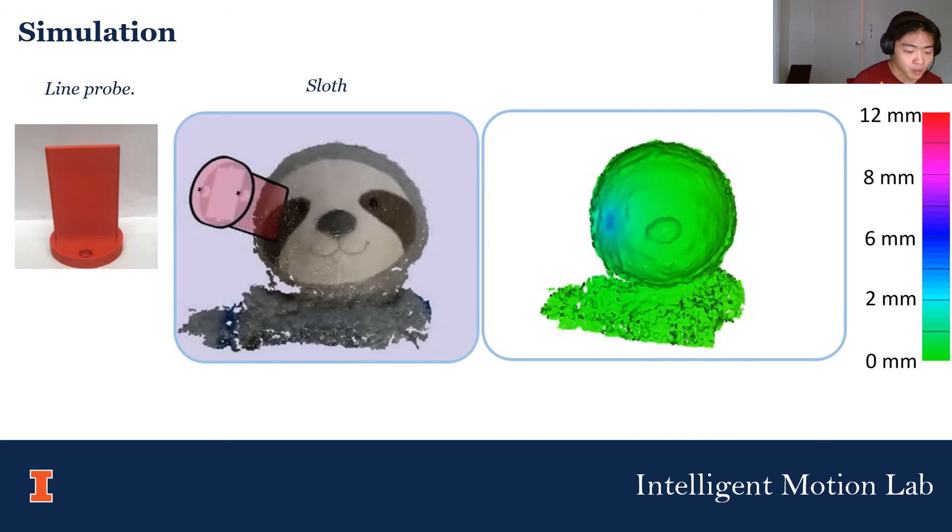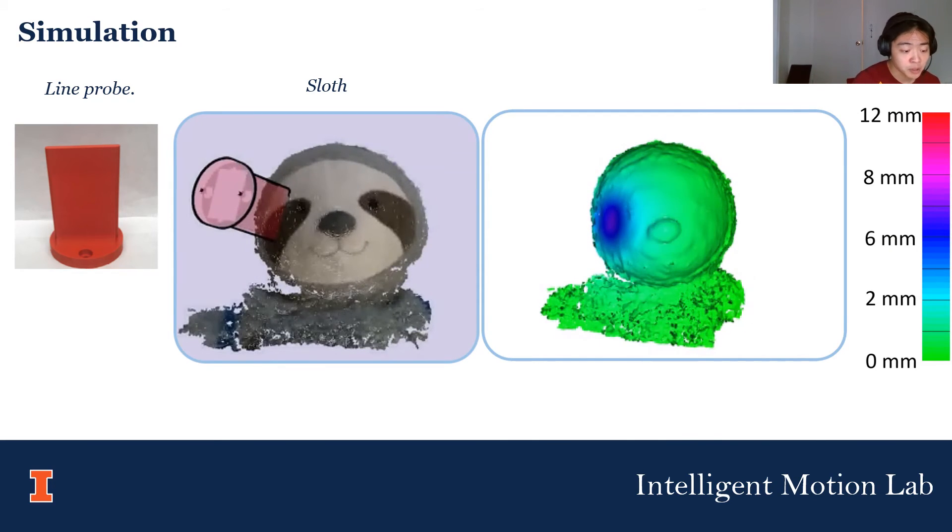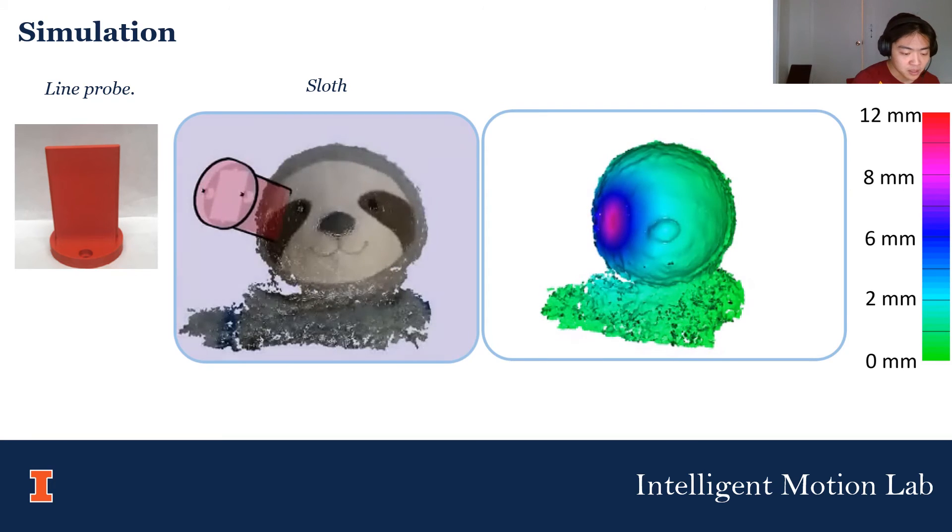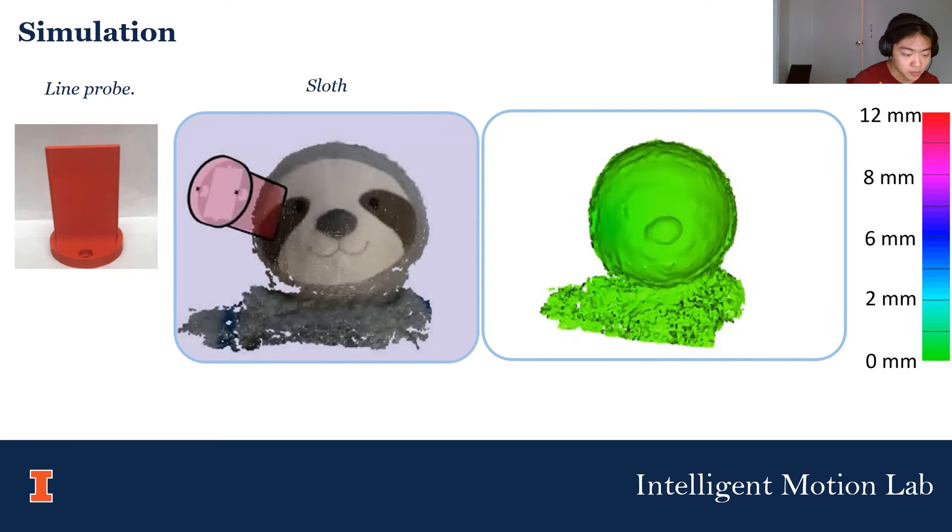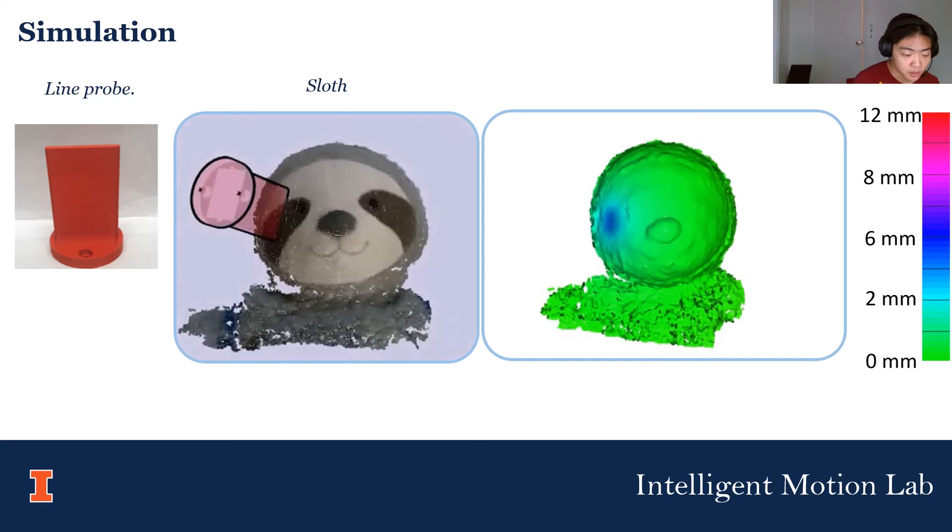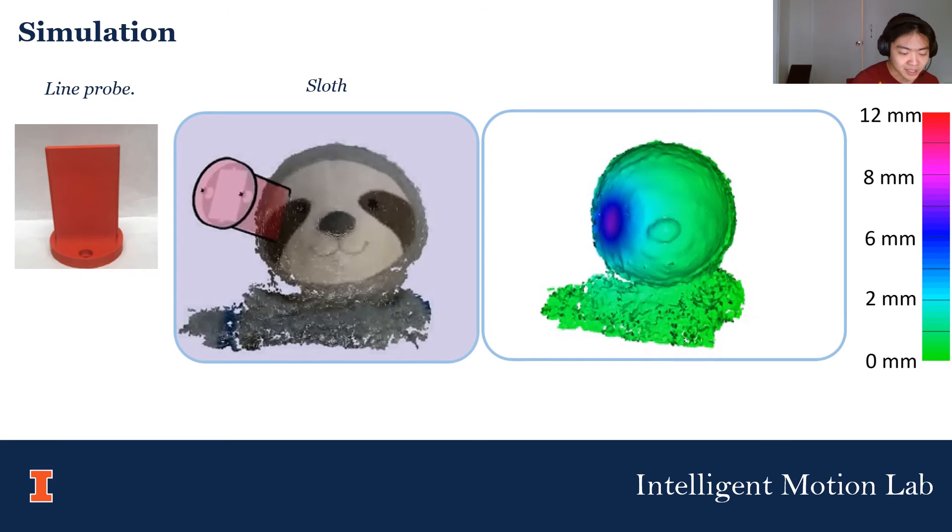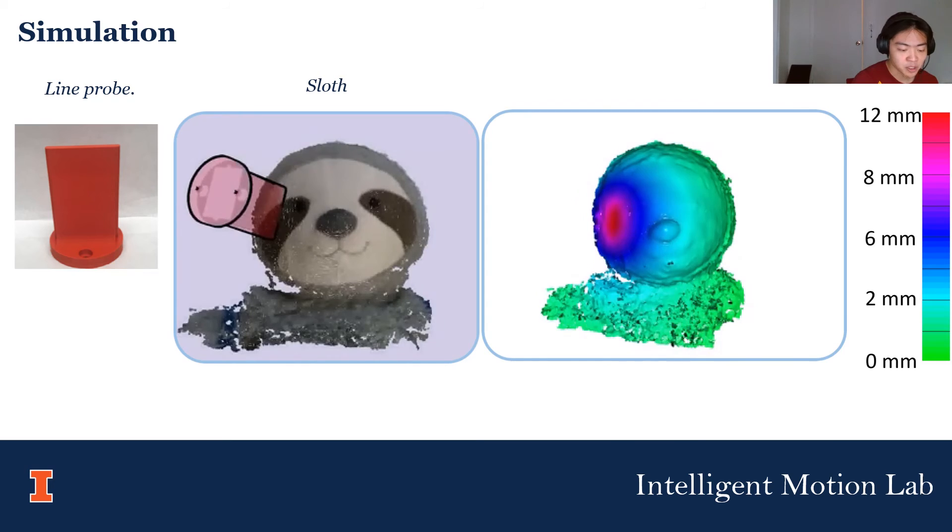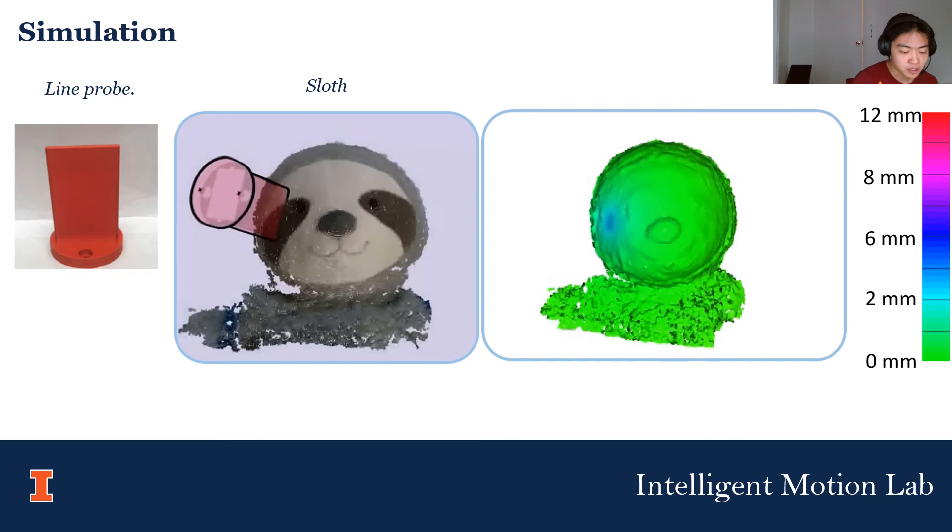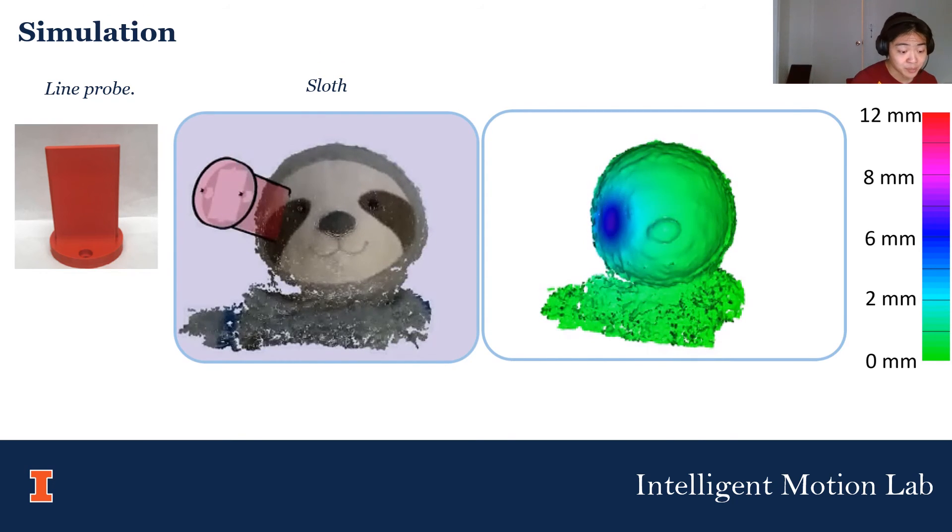During simulation, we use the shape of the object to determine how it would make contact with an arbitrary rigid object. We link the surface deformation at individual points with the Hertzian contact model. Using the learned point force models, we can simulate the resulting contact. The colors in this simulation show the amount of surface deformation for a line probe that the robot has never seen before.